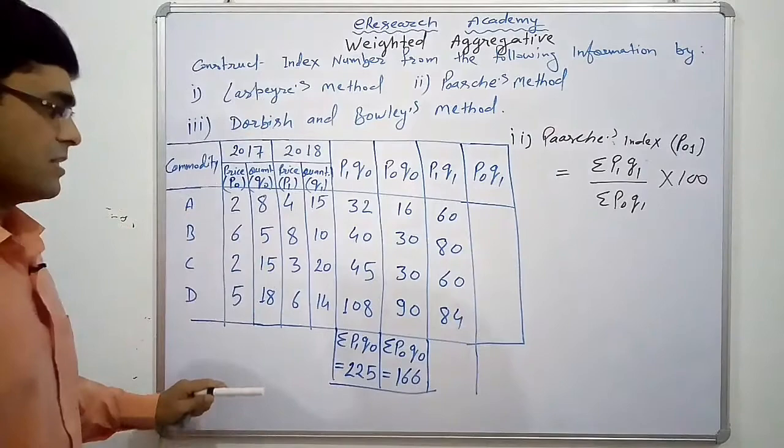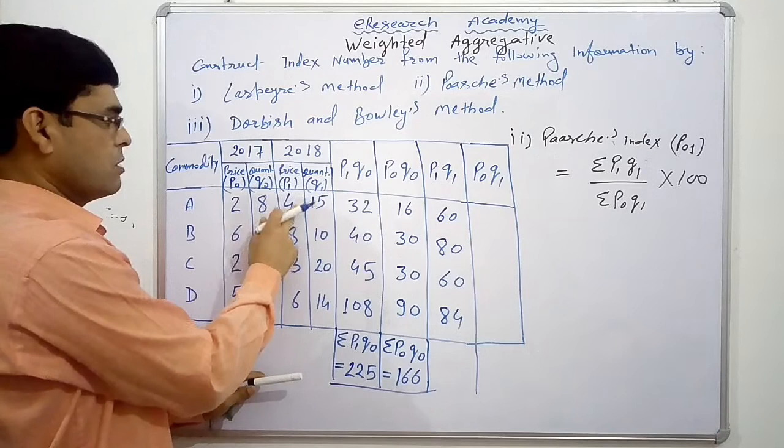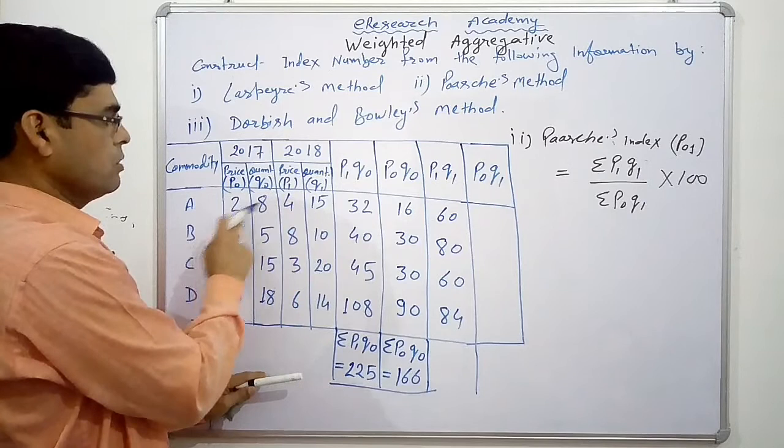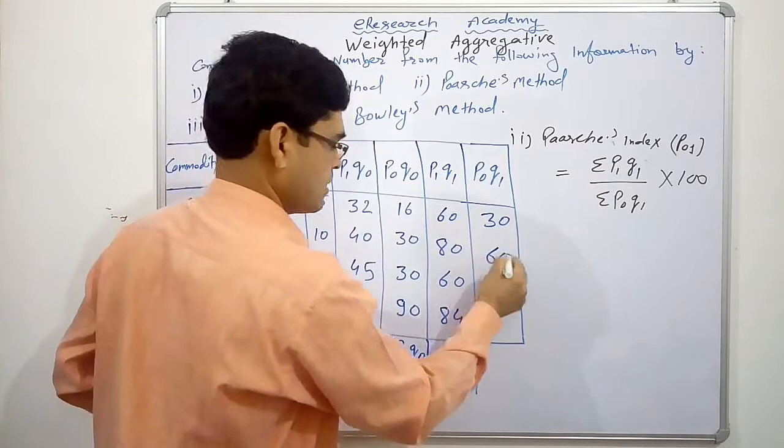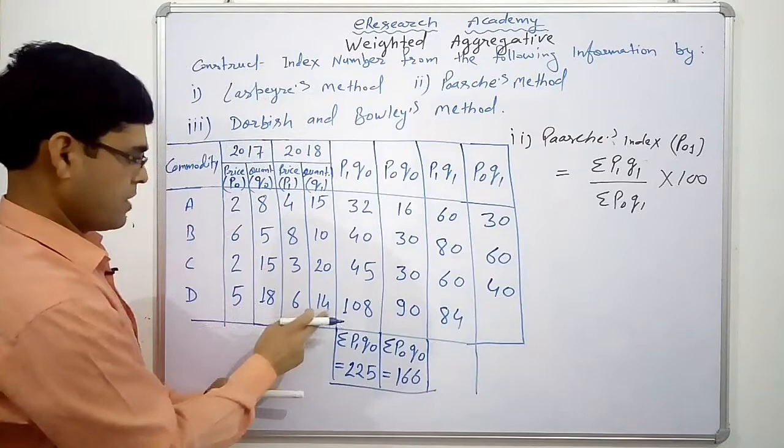Next P1 Q1. Sorry, P0 Q1. First column and last column. P0 we have 2 and Q1 we have 15. 2 into 15, 30. 6 into 10, 60. 2 into 20, 40. 5 into 14, that is 70.